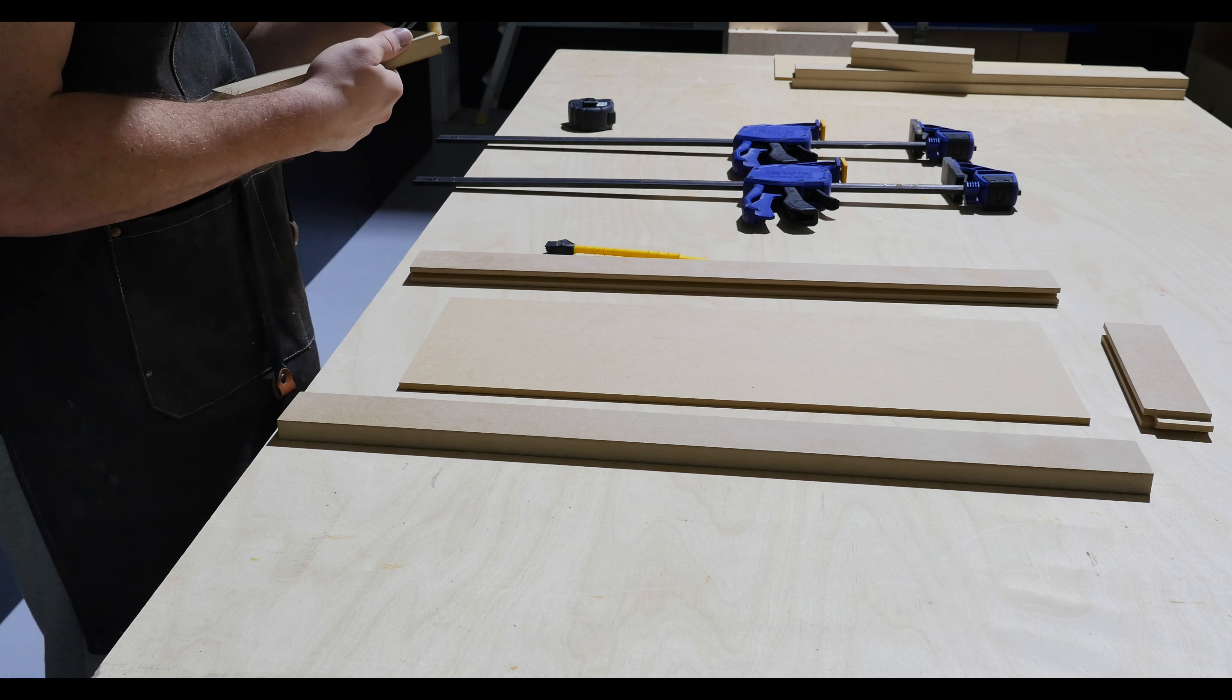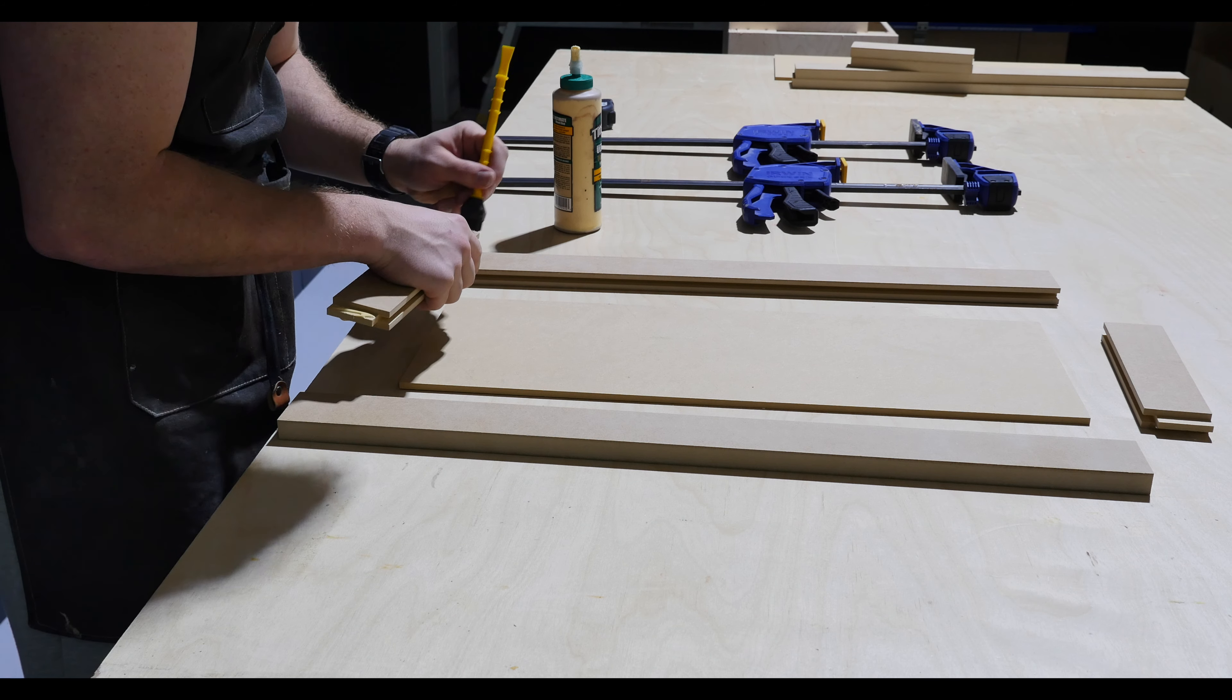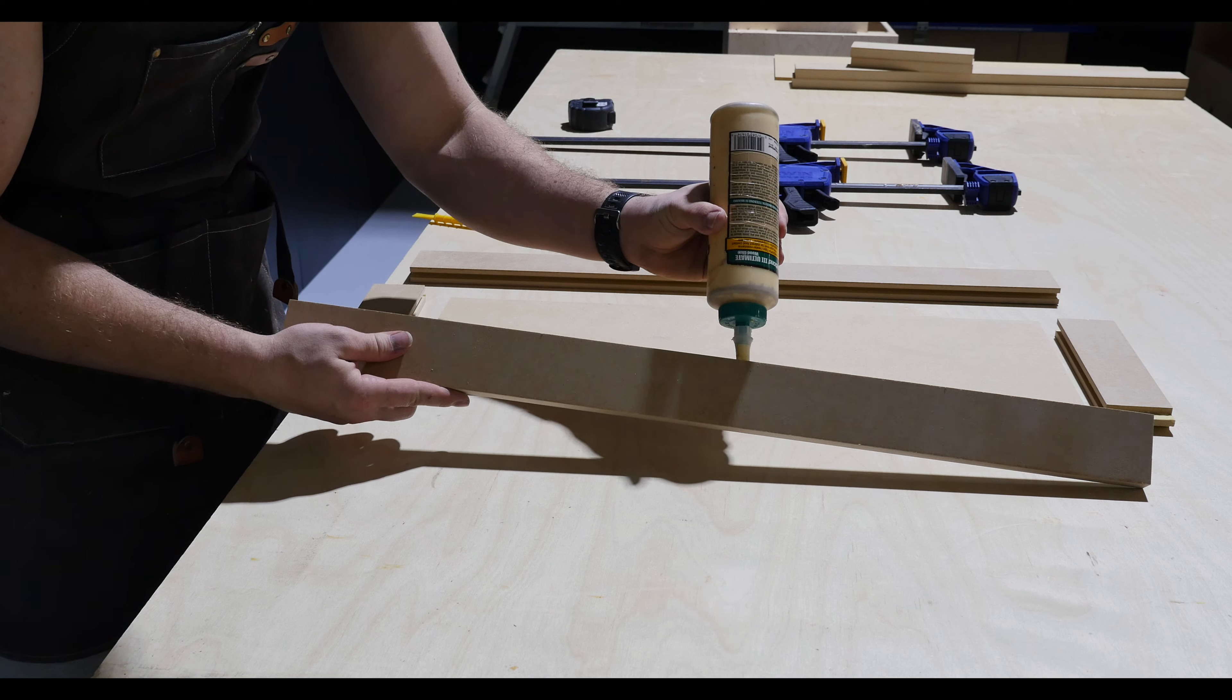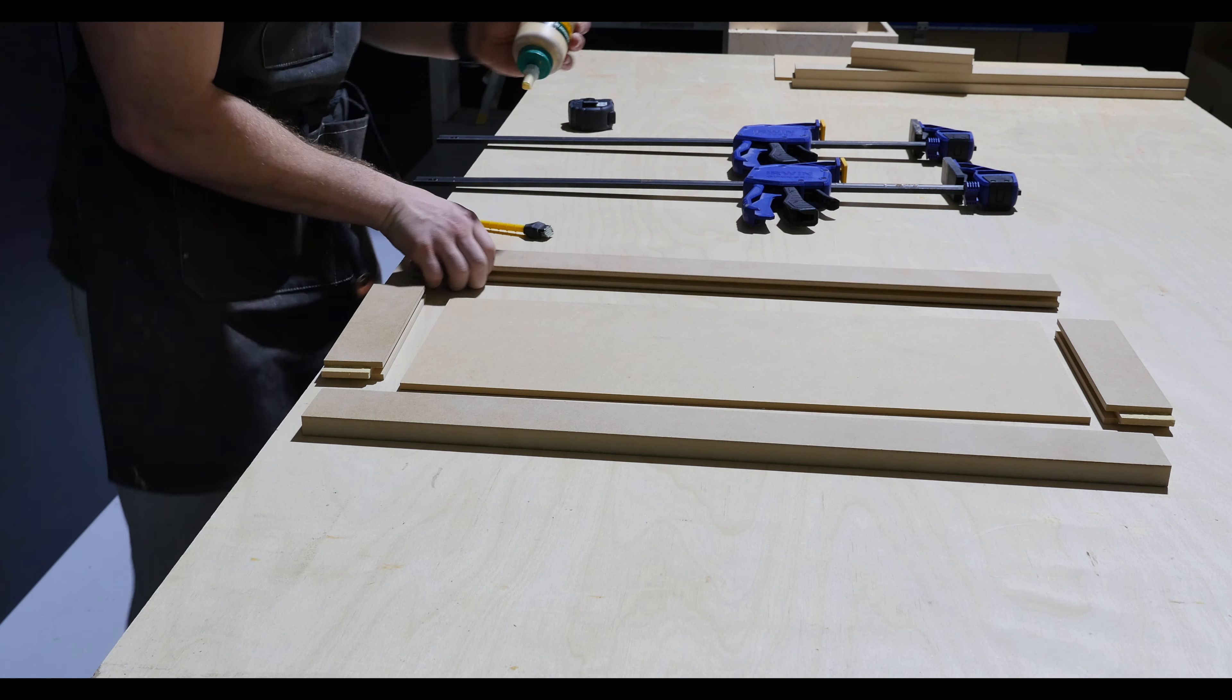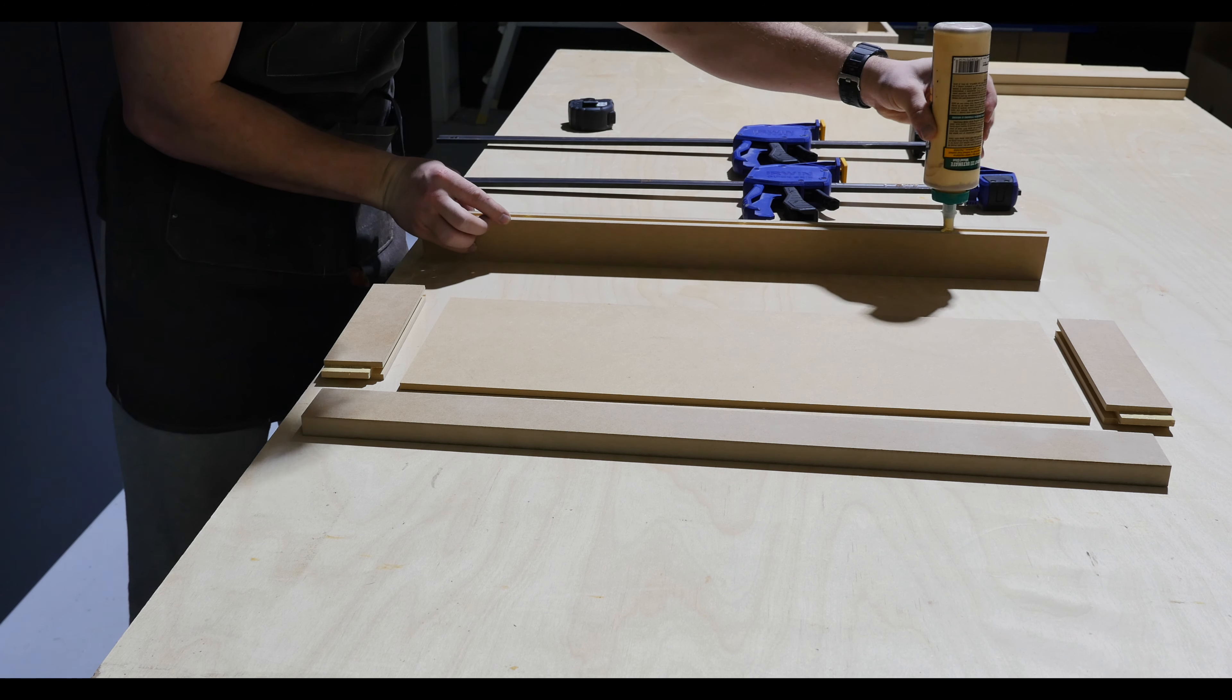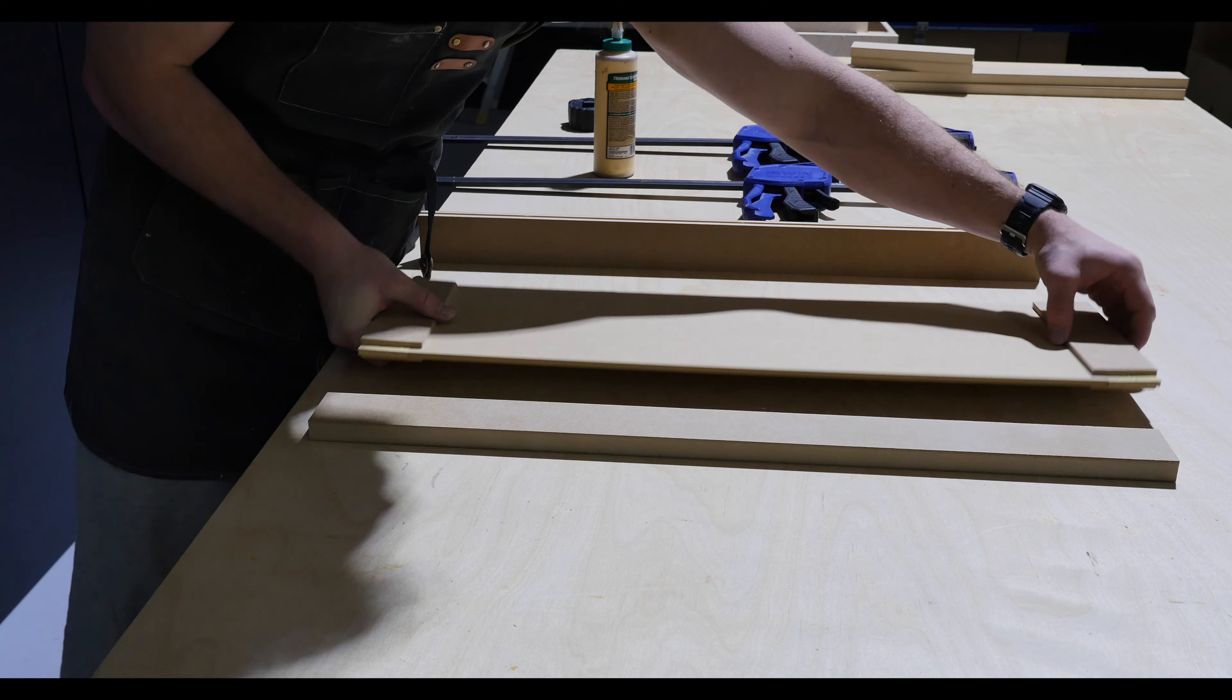Now all we're going to do is apply glue to both sides of the tongue on the rails. We're going to do that on both rails on both sides. So how many sides is that? One, two, three, four, five, six, seven, eight. Next thing I'll do is apply a little bit of glue down the groove on the styles because again this is a static panel so it does not need to move. If you're doing a real wood door, don't do this. You will create lots of headache for yourself. Now we can put it all together and clamp it.